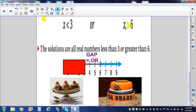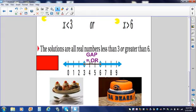Now, let's graph x is greater than 6. Open circle. 7, 8, 9. This inequality goes to the right. Notice that I have a gap here.